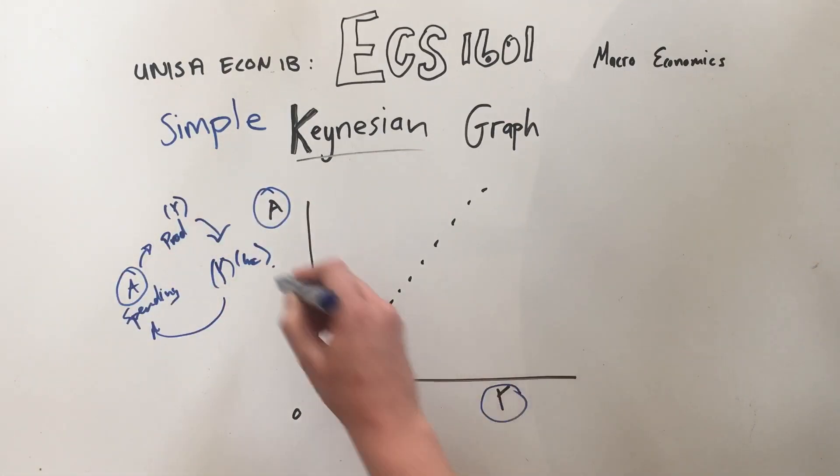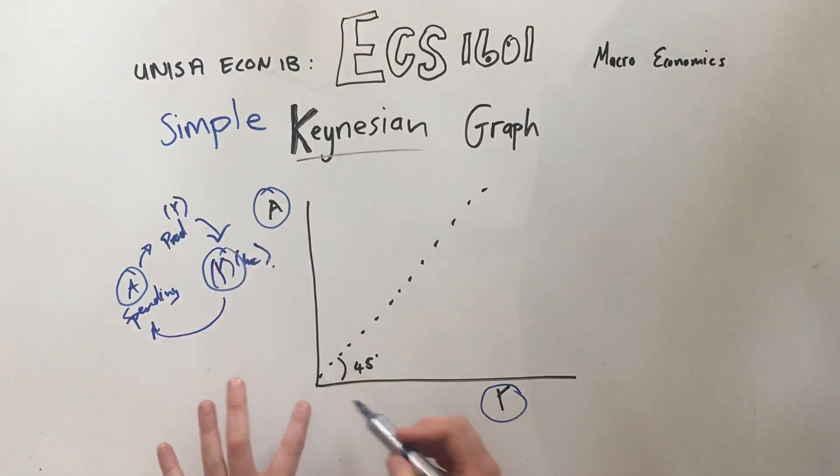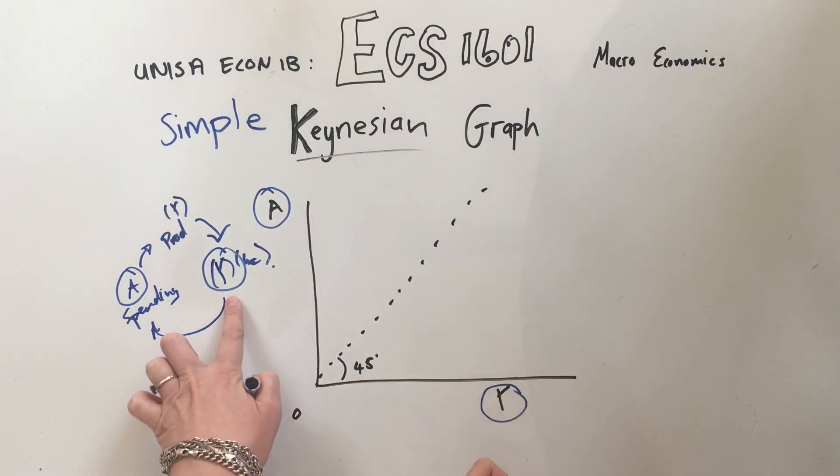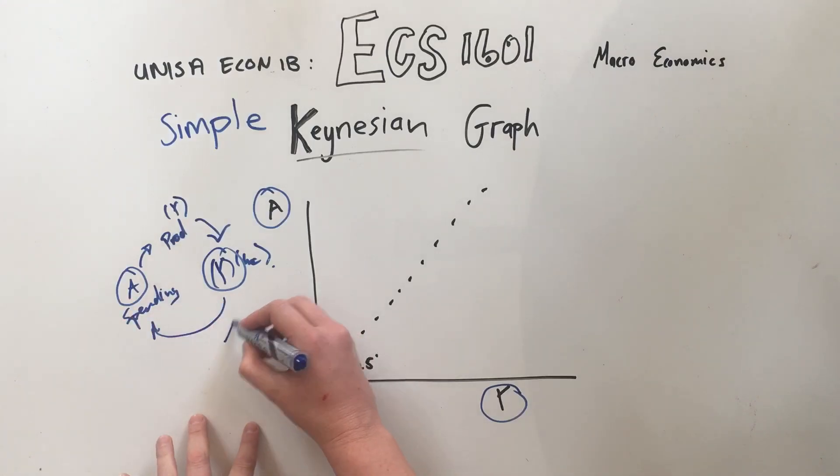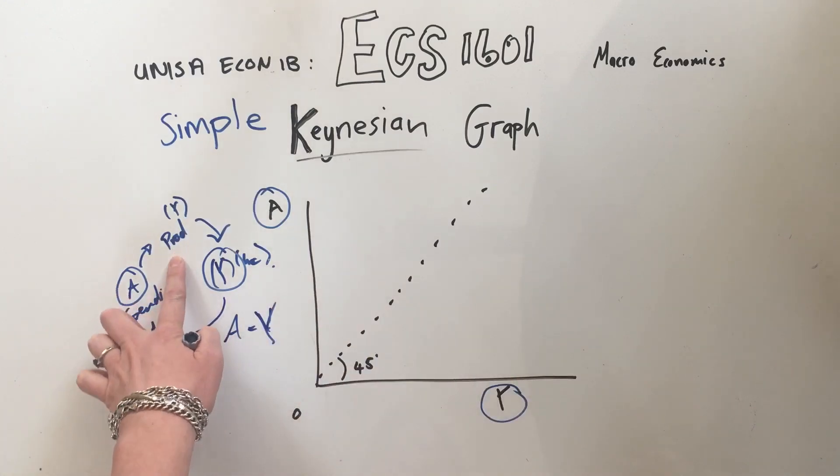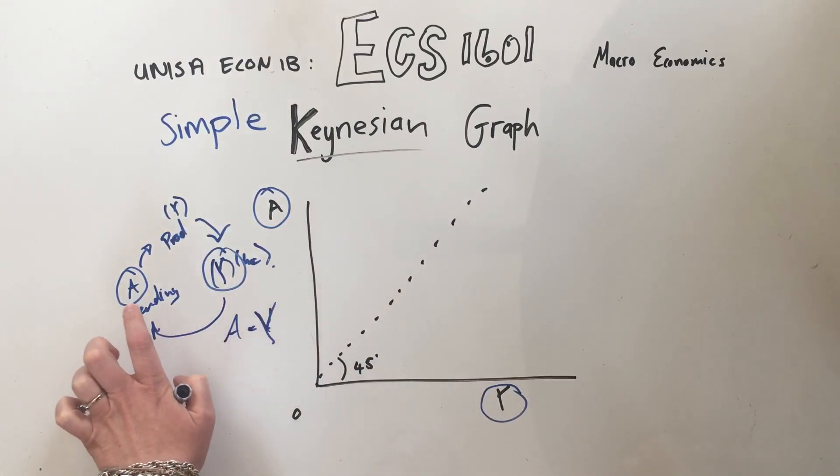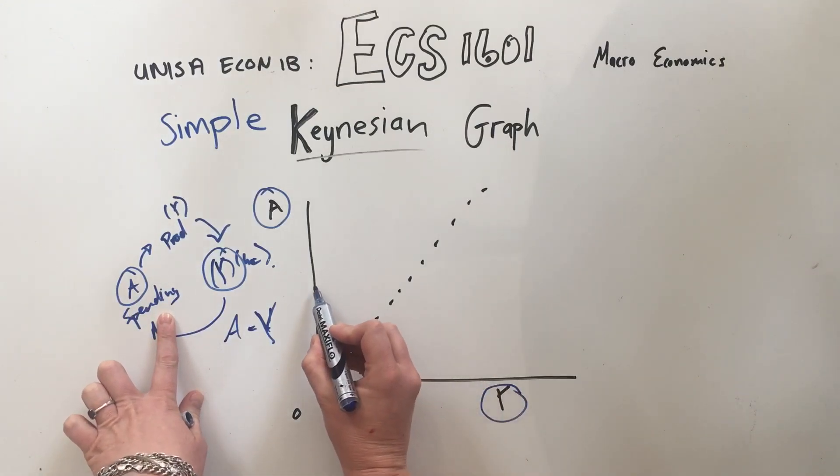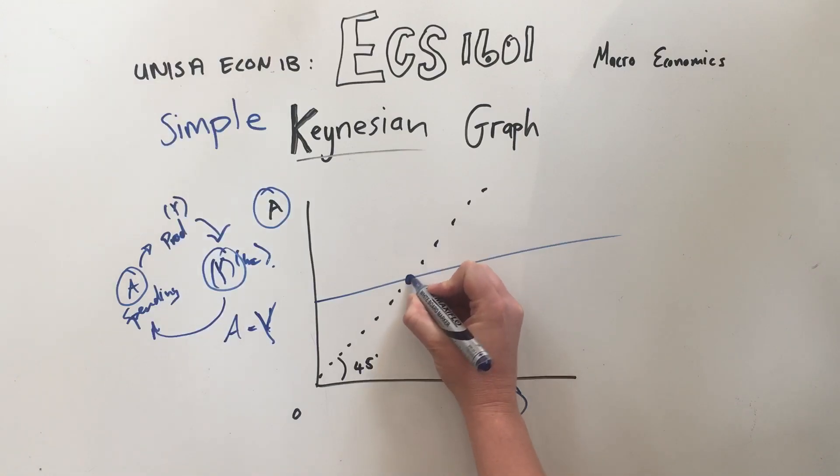Now all this graph says is this A over here and this Y over here is now plotted on a graph, and this 45 degree level is if A equals Y. So when A equals Y, it is when the production in the economy and the income in the economy equals the spending in the economy, and our curve over here intersected. So today that is our equilibrium level of income.